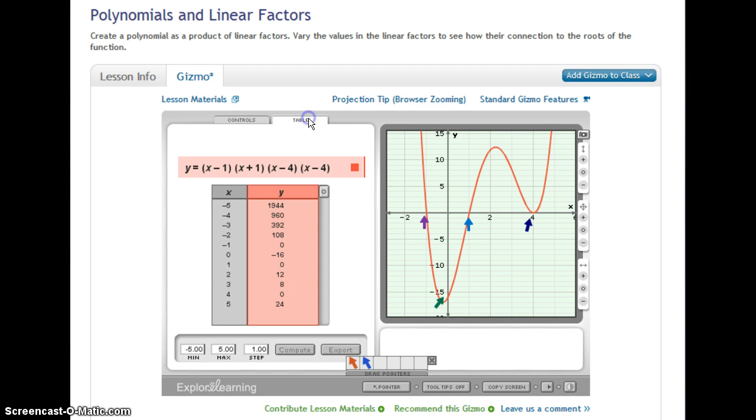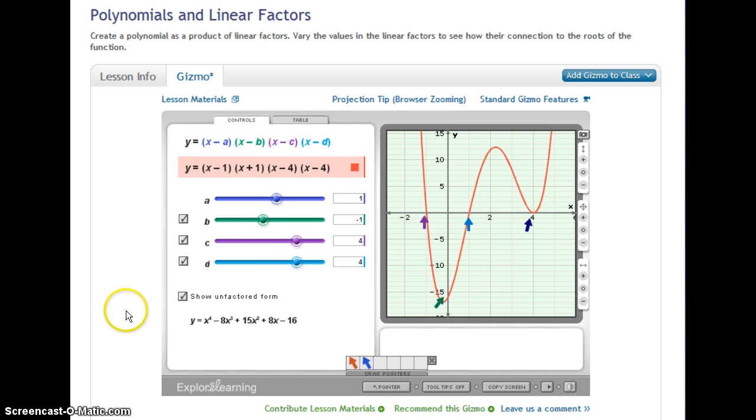You can always look at the table to verify this. So there's our y-intercept at negative 16, 1, zero at negative 1, another zero at positive 1, and another zero at 4. You see this gizmo is quite helpful. Now, how about you?